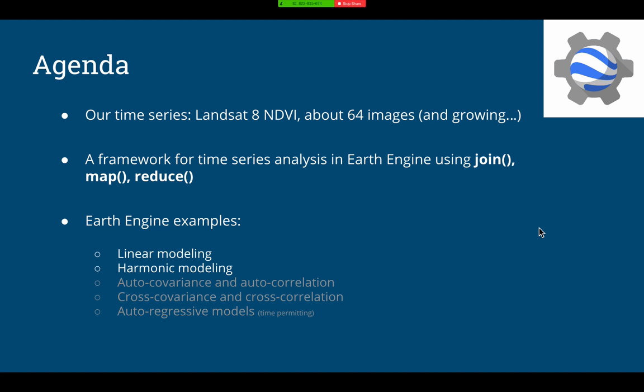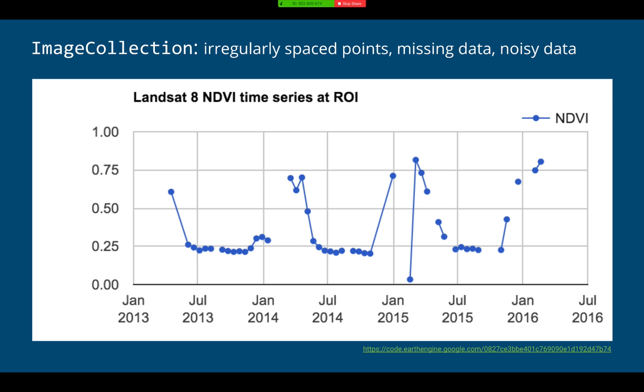I'll start with the time series. We're going to be working with a Landsat time series. Landsat 8 has about 64 images since its launch in 2013, something every two weeks. We'll do the linear modeling and the harmonic modeling examples on the Earth Engine tutorial website. I think this presentation actually goes a whole lot further into covariance and autoregressive models too. I'm going to use my time to talk about change detection instead.